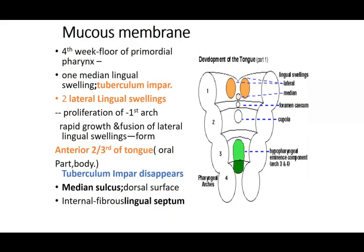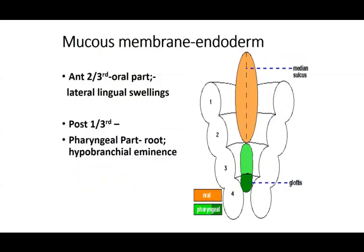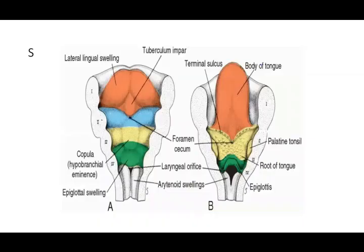Recollecting tongue formation: the anterior two-thirds — first the median swelling, the tuberculum impar, appears; then two lateral swellings arise; the lateral swellings fuse and form the anterior two-thirds; the median swelling disappears. Behind the foramen cecum, the copula develops from the second arch, and the hypobranchial eminence from the third and fourth arches. Copula disappears; the posterior third is formed from the hypobranchial eminence.